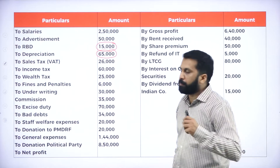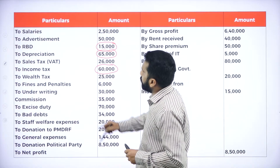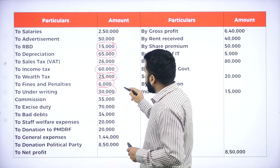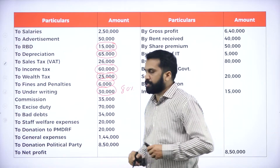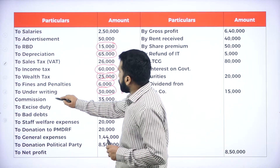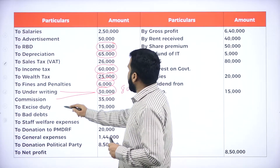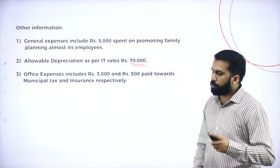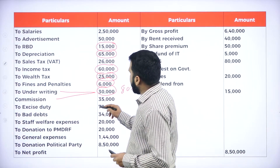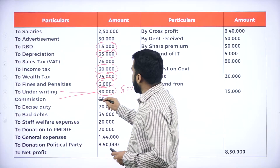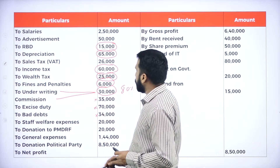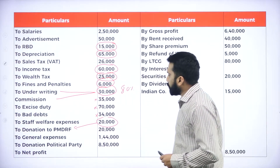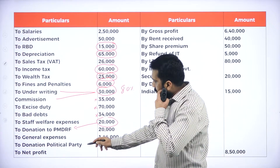Sales tax is a part of your business. Income tax — consider. Wealth tax — consider. Finance penalty — consider. Underwriting commission — consider, but only 80%. Excise duty — part of the business. Bad debts — do we have adjustment? No, so we are not supposed to take. Staff welfare — no. Donation to PMDRF — yes, we are supposed to consider. General expenditure — part of your business, yes. Donation to political party — yes.